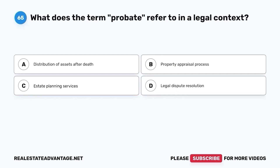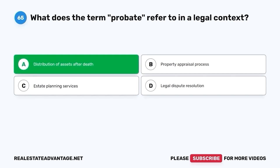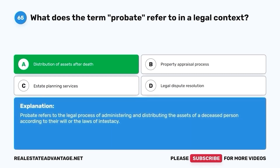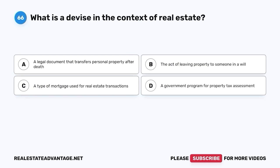Question 65. What does the term probate refer to in a legal context? A. Distribution of assets after death. B. Property appraisal process. C. Estate planning services. D. Legal dispute resolution. The correct answer is A. Distribution of assets after death. Probate refers to the legal process of administering and distributing the assets of a deceased person according to their will or the laws of intestacy.